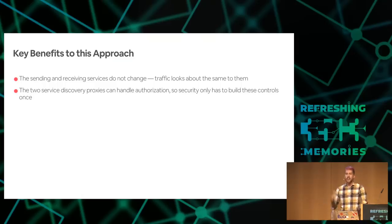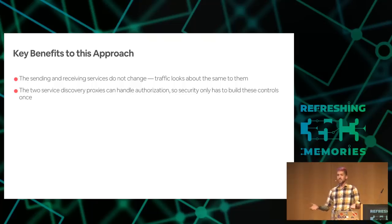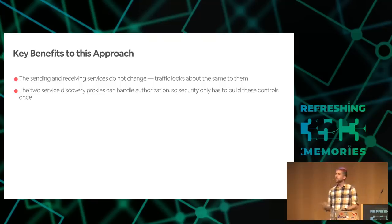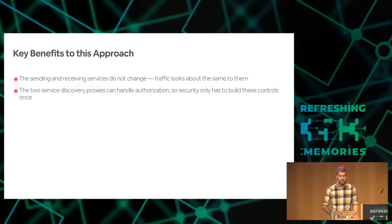We were able to radically change the security model of cross-host communication without touching a single line of an engineer's code — that's where our invisibility comes from. There are also big additional benefits: security was able to build these controls once and distribute them across the entire fleet. The same proxies can run regardless of what language the service is written in or what protocol it uses. Instead of having to verify authentication and authorization code in dozens of different frameworks and languages, we're able to do it just about once.